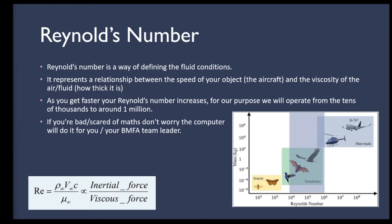The Reynolds number equation uses density of your air, your airspeed, the local chord length divided by dynamic viscosity. If you're not comfortable with maths, don't worry — a lot of this will be done by a computer, or your BMFA team leader can do it for you. It's an interesting parameter and we'll go into more depth when we start designing.